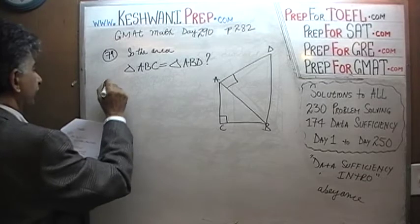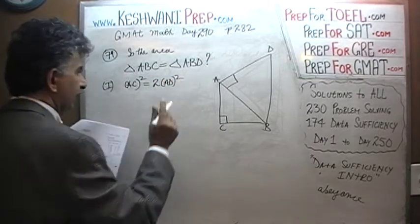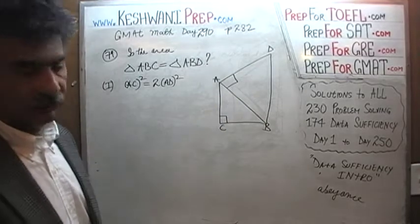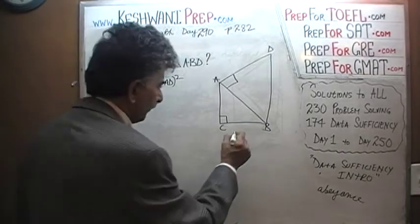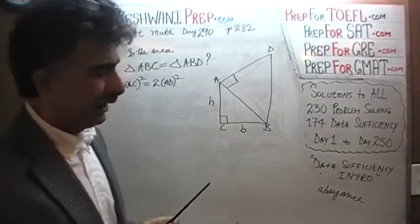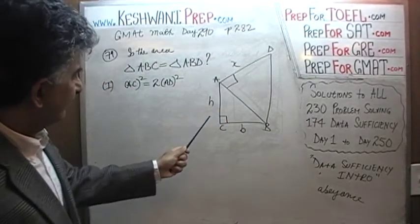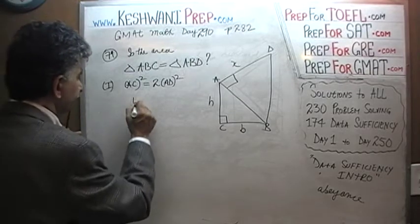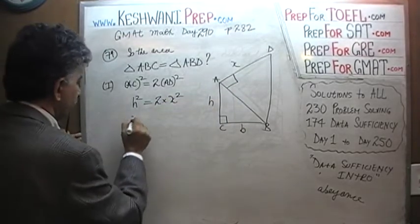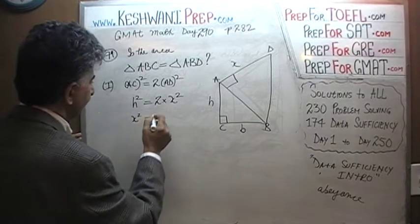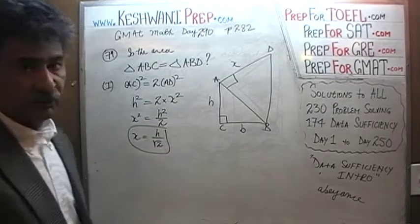The first thing they tell us is that AC squared equals two times AD squared. Let's give these sides some names so it's easier to discuss. The bottom triangle is the right-angle triangle — let's call its sides base and height. And the AD part, let's just call it X. So AC squared is your H squared, equals two times AD squared which we are calling X. So X squared equals H squared over two, and if we take the square root, X is simply H over root two. This is what the first statement tells us.